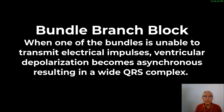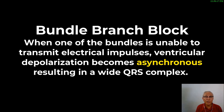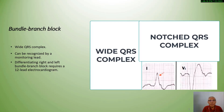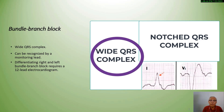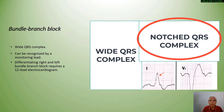Bundle branch block is a situation wherein one of the bundles is unable to transmit electrical impulses. Normally, electrical impulses traveling into the ventricles proceed to the bundle of His onto the left and the right simultaneously, resulting in a narrow QRS complex. When there is a bundle branch block, however, one of the bundles is unable to transmit electrical impulses, resulting in asynchronous depolarization of the ventricles. The major manifestation is a wide QRS complex, and more commonly also a notched QRS complex.